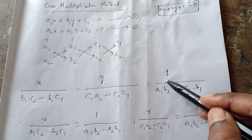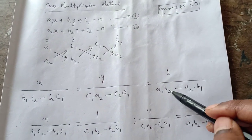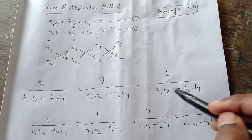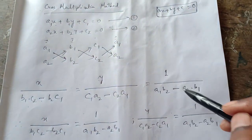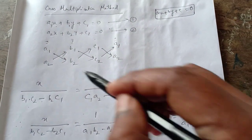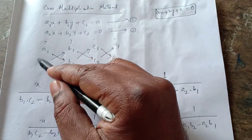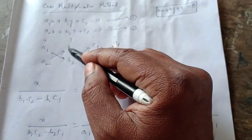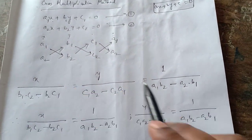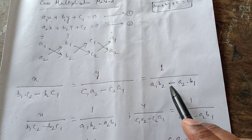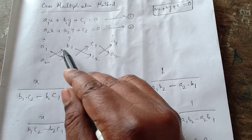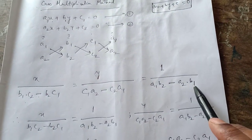Similarly, below 1 we shall not write the constants. We shall cross multiply the coefficients of X and the coefficients of Y, this way: A1 into B2 minus A2 into B1.